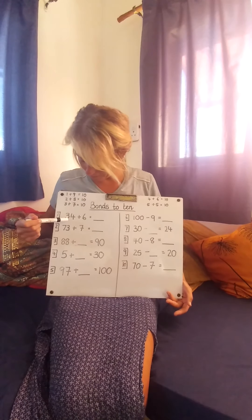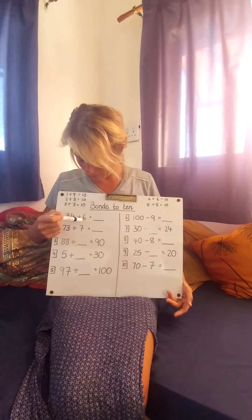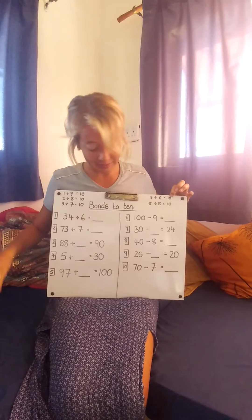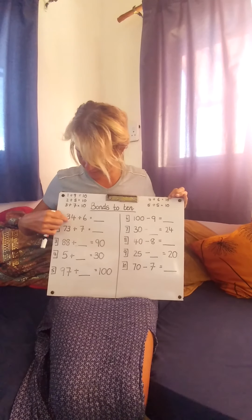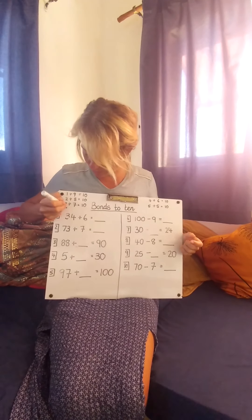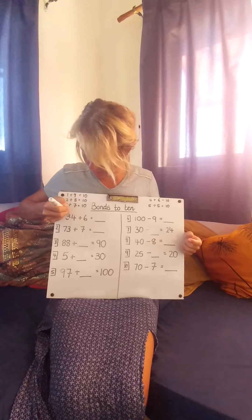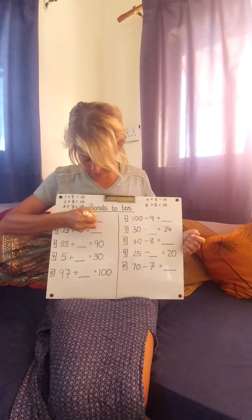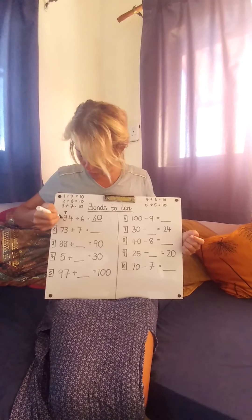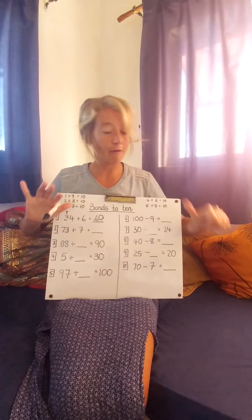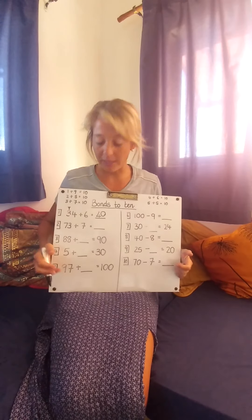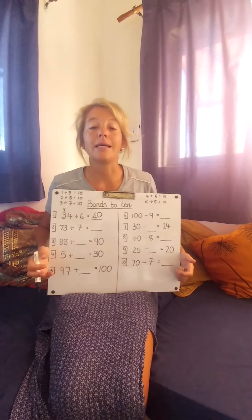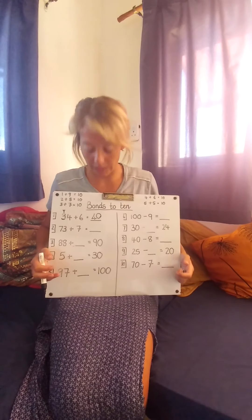So let's look here. 34 plus 6. So I know here that a 4 and a 6 makes a 10. And the next 10 after 30, because remember this is our 10, our next 10 after 30 is 40. So 34, 35, 36, 37, 38, 39, 40. But we knew that already, because 30 with a 4 and a 6 is 30 plus 10.